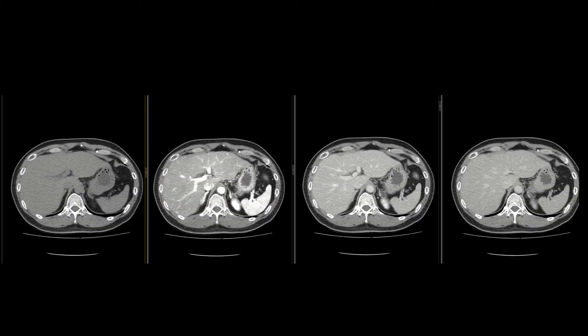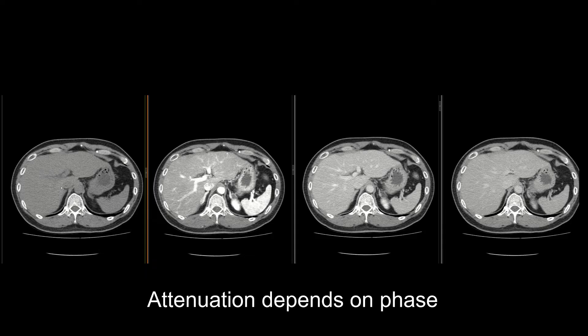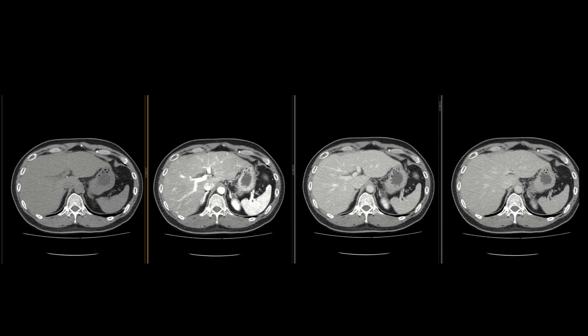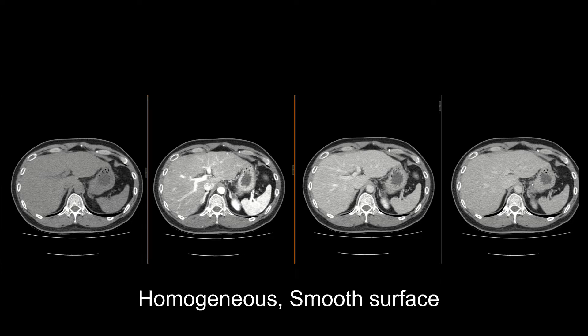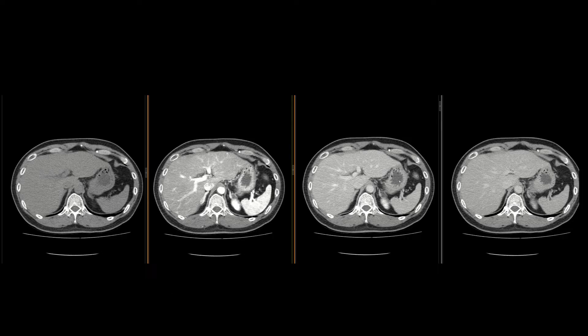Let's look at this four-phase scan of a normal liver. You'll notice that the appearance and attenuation of the normal liver depends heavily on the phase of IV contrast, but the normal liver is pretty homogeneous on all of these phases. Normal liver has a dual blood supply: about 75% from the portal venous system and about 25% from the hepatic artery.